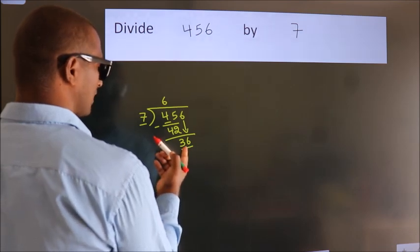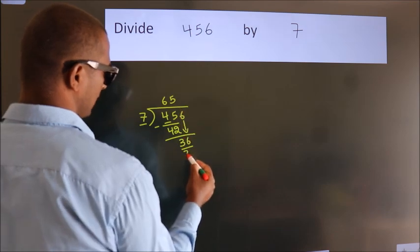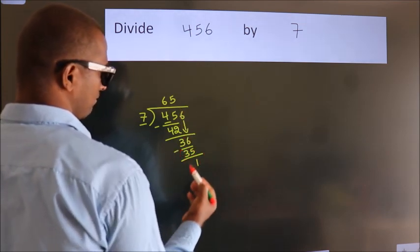A number close to 36 in the 7 table is 7 times 5, which is 35. Now we subtract. We get 1.